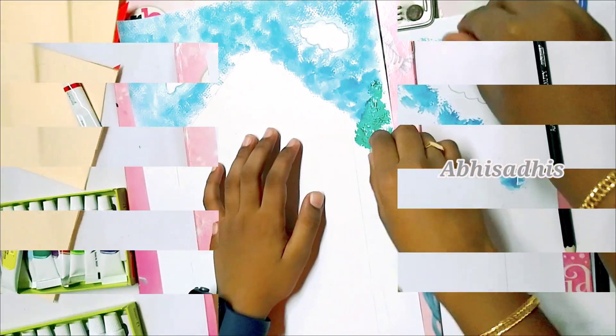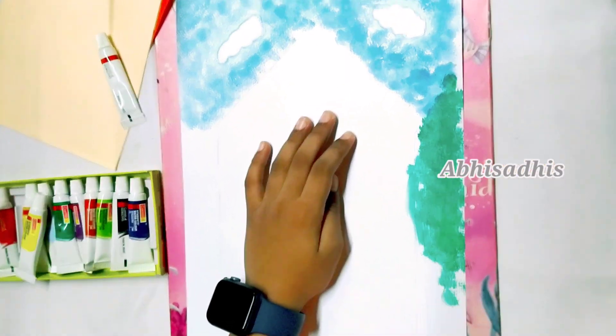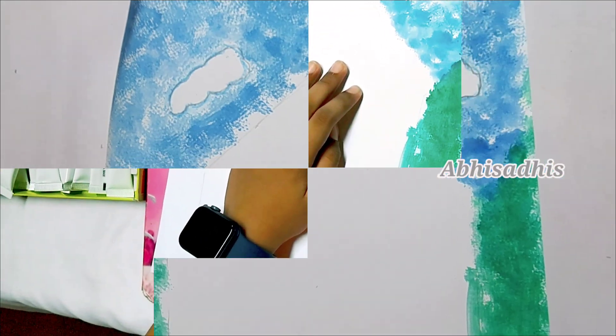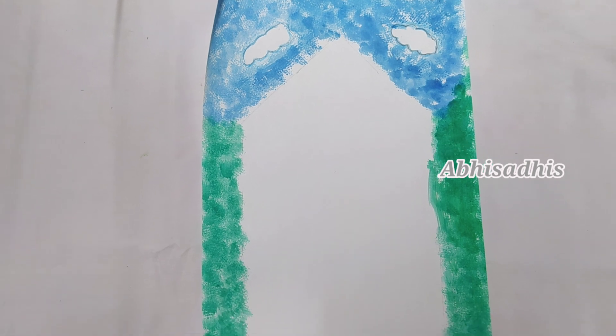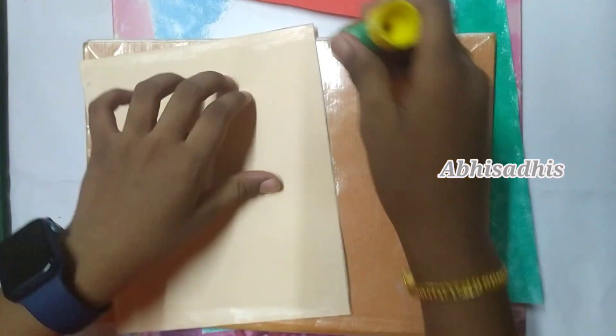Now color the rest of the part green. After that paste the cutouts of the rectangle and triangle in the outlined area.